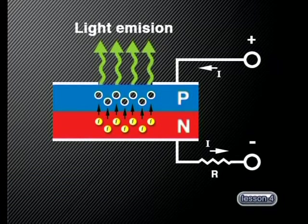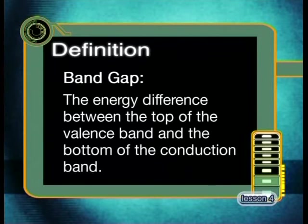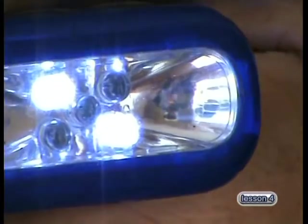The colour of the light depends on the band gap energy of the material used to make the diode. The term band gap refers to the energy difference between the top of the valence band and the bottom of the conduction band. For example, gallium arsenide phosphide produces a red or orange light because of its particular band gap. When the band gap is different, the colour of the light emitted will be different too. Today, LEDs are being used as an alternative light source to the normal light bulb — for emergency lights, torches, and are being tested for use as traffic lights.